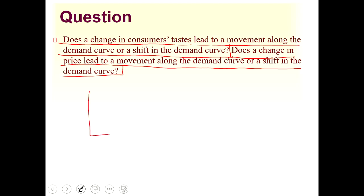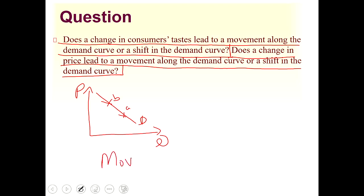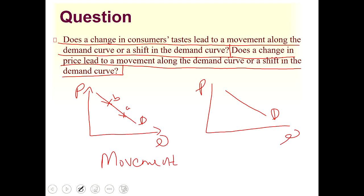Remember that on the demand curve, we have price on the vertical axis and quantity on the horizontal axis. A movement along the demand curve would be movement from point A to point B. A shift, however, means the entire demand curve moves — shifting upward or downward — giving us demand one, demand two, demand zero.